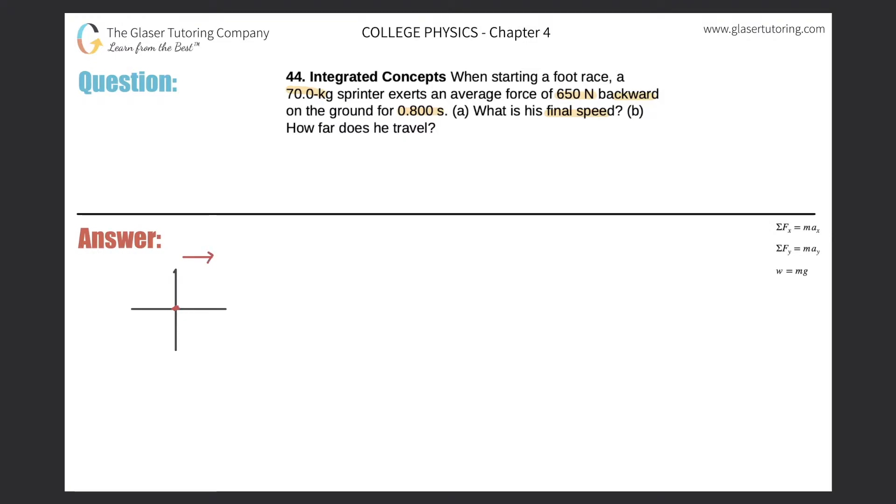You could choose to the left, it doesn't matter. Your values should be the same magnitude, but it probably will have opposite signs. In any case, so now it says he exerts an average force of 650 newtons backward on the ground. Okay, fine.